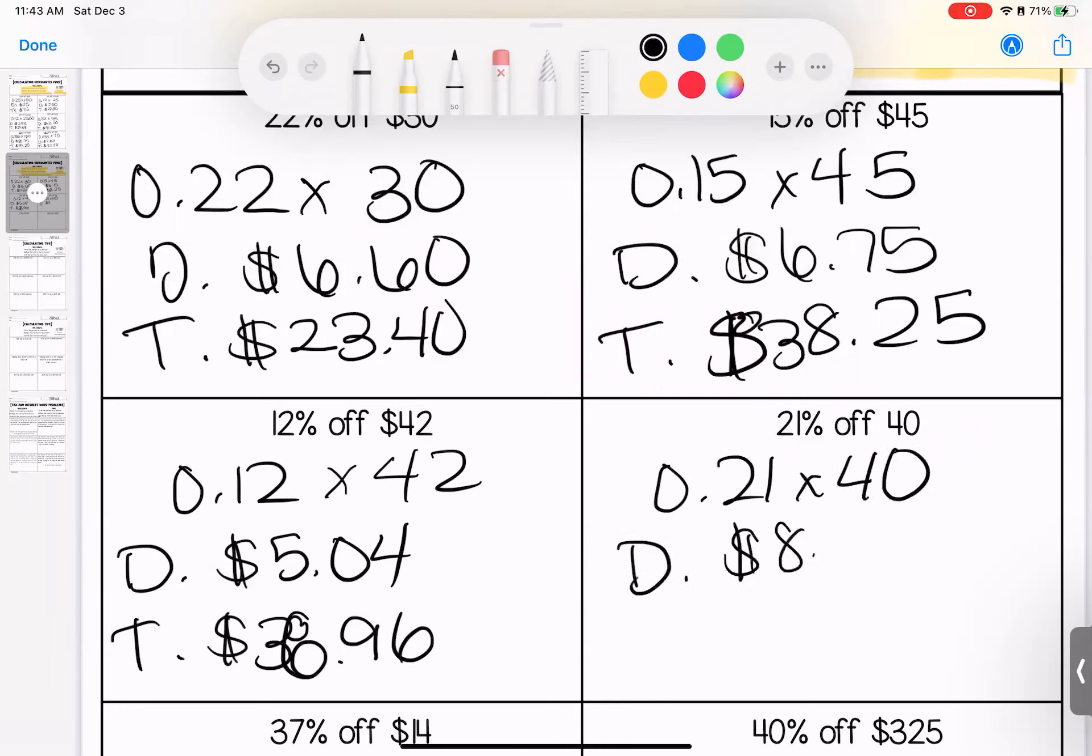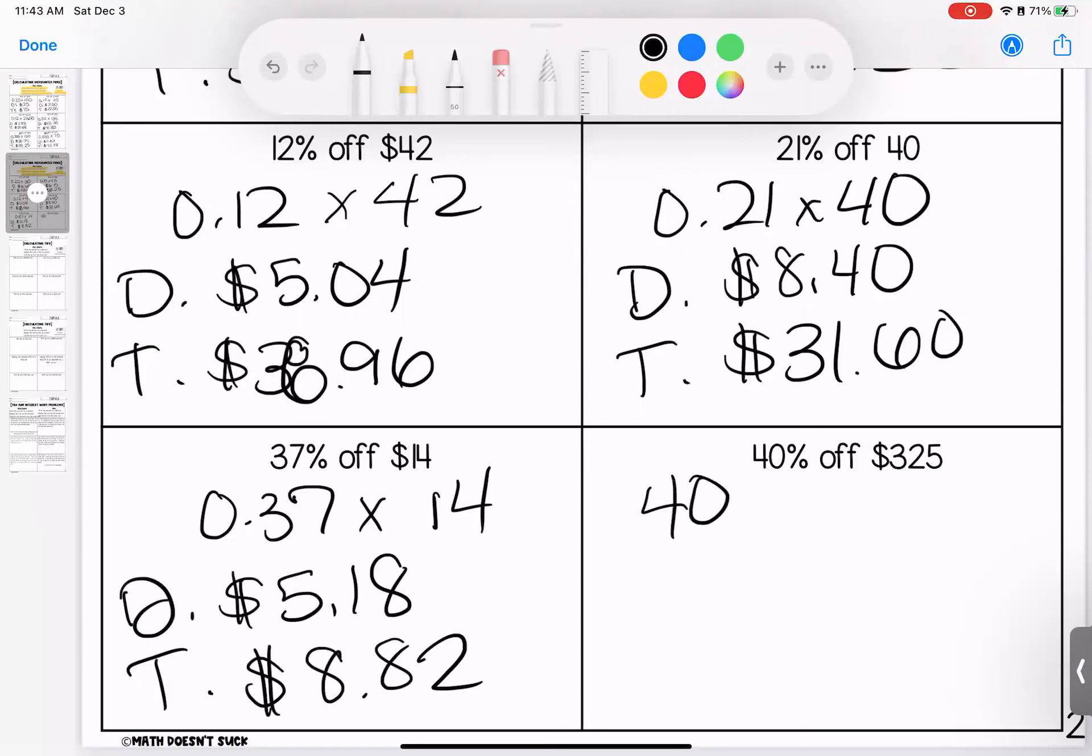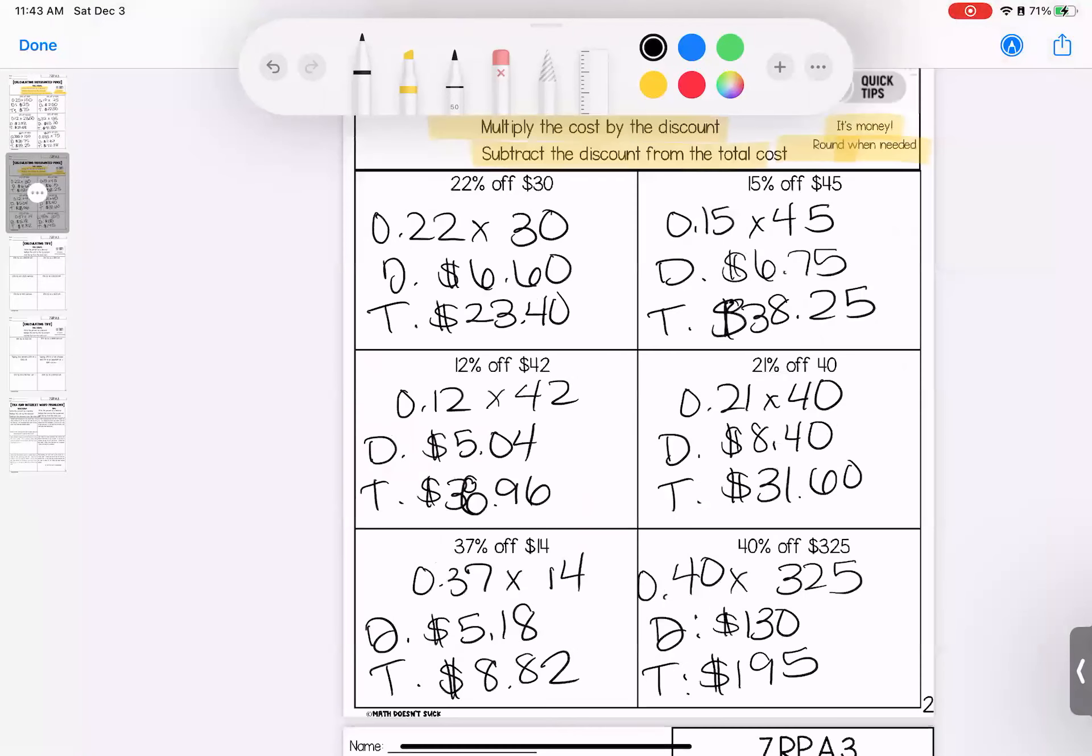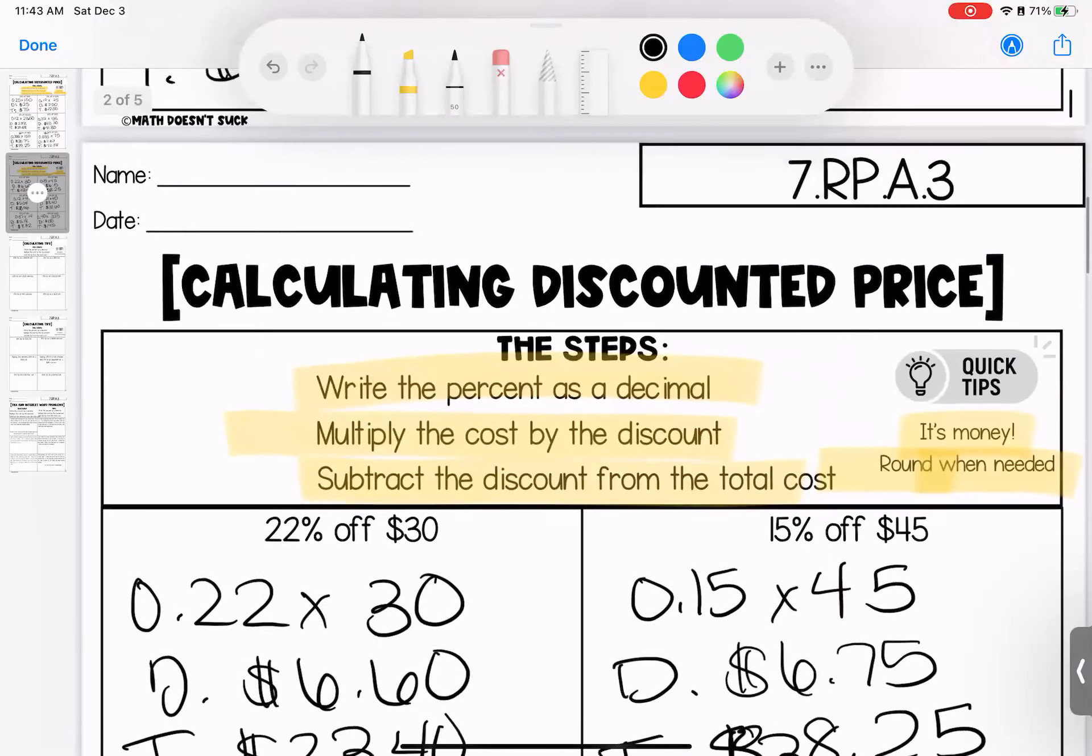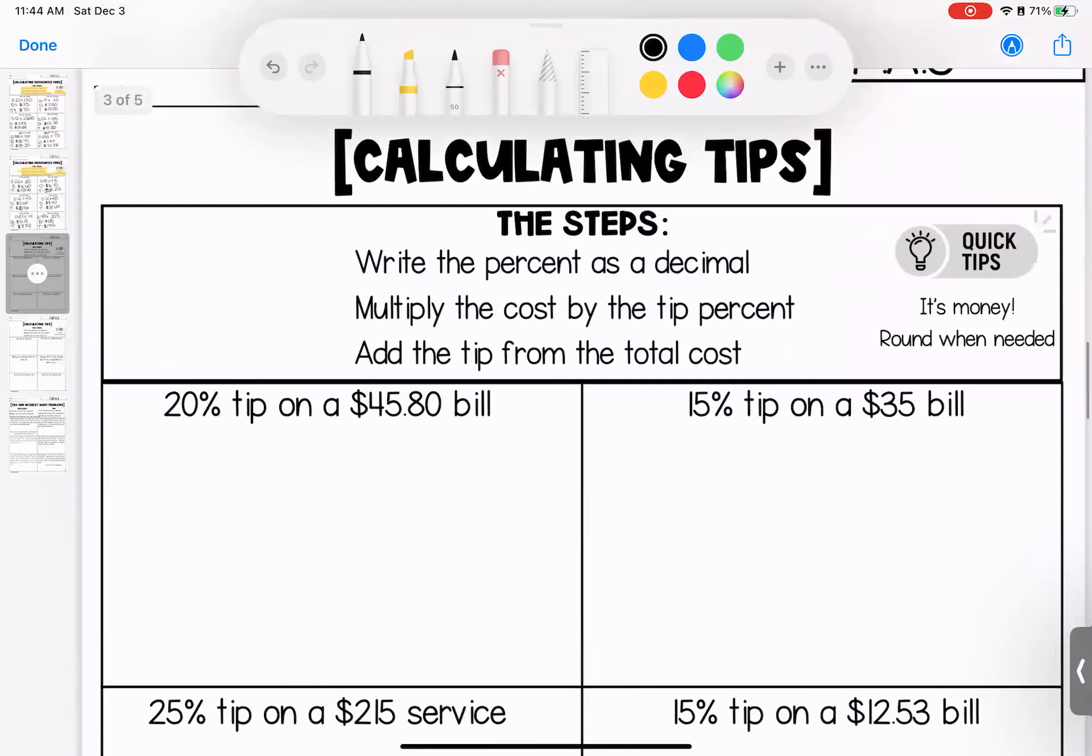21% of $40, my discount is $8.40, my total paid is $31.60. Last one for this page, 40% of $325, my discount is $130, my total paid is $195. That brings us to the end of this page focusing on discounts. Please bring any questions with you to class.